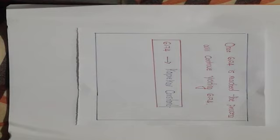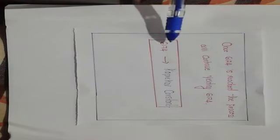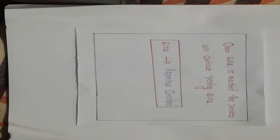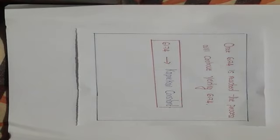This peculiarity of the number was discovered by a mathematician called Kaprekar. So the number 6174 is called Kaprekar's constant.